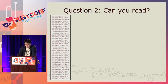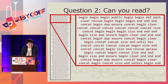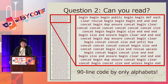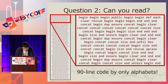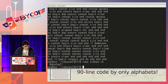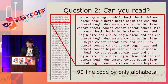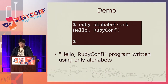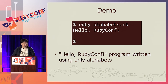Question two — please open your eyes and unblock your ears. This column is also complete because it uses only alphabets. This is a 90-line Ruby code using only alphabets — no symbols at all. Let's run it. Hello, RubyConf! So, again, this is a Hello RubyConf program. Programming language Perl is often criticized because it uses many symbol characters, but this program uses no symbols, so it should be more readable, I think.